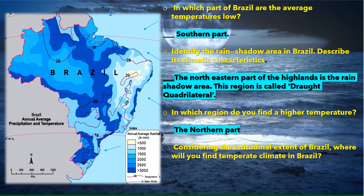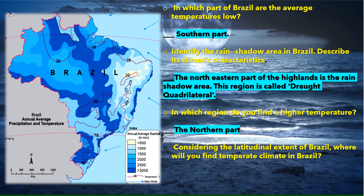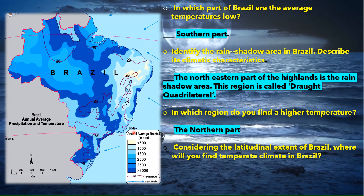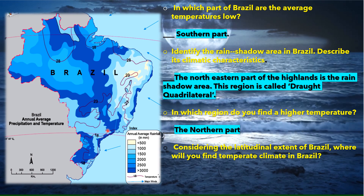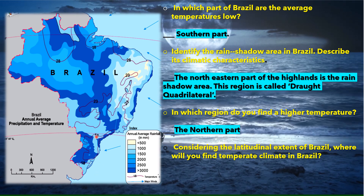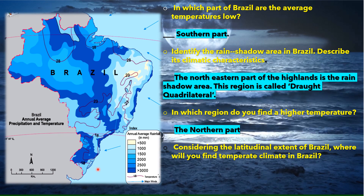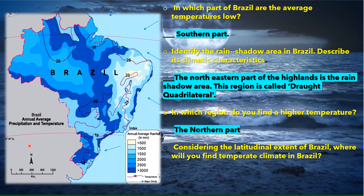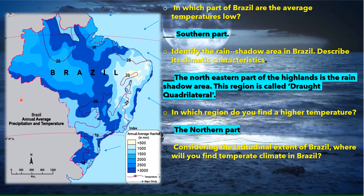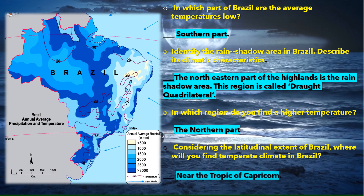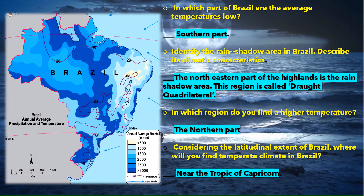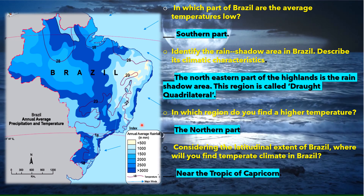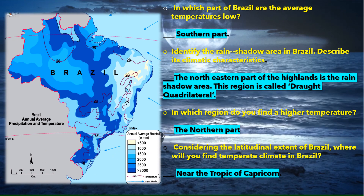Considering the latitudinal extent, where will you find a temperate climate in Brazil? The Tropic of Capricorn passes through the middle of Brazil, and south of it begins the temperate zone. So the region below the Tropic of Capricorn, toward the southern part of Brazil, will experience a temperate climate.